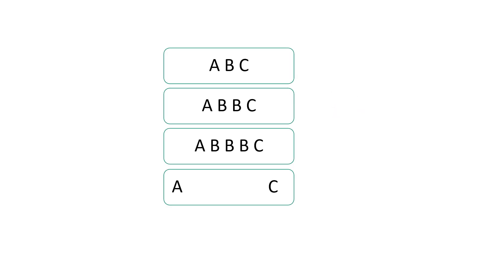In the first box we have A, B, C. In the second box we have A, B, B, C. In the third box we have A, B, B, B, C. So what will be the rule? In the first box we have 1 B between A and C. In the second box we have 2 Bs between A and C. In the third box we have 3 Bs. So in the last box we will have 4 Bs between A and C.